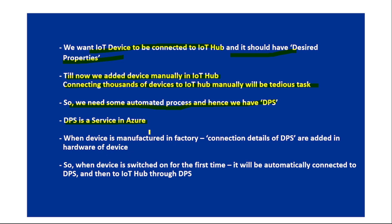At a high level, DPS works like this: when a device is manufactured in the factory, the connection details of DPS are added to the hardware of the device. When that device is switched on for the first time, it will automatically connect to DPS, and through DPS it will be connected to the IoT Hub. This whole process is automated.